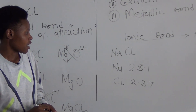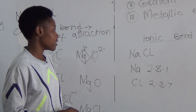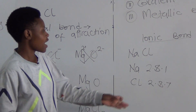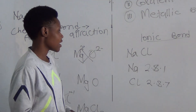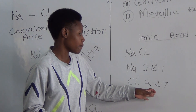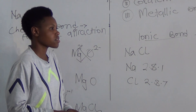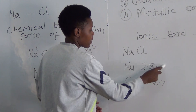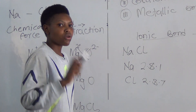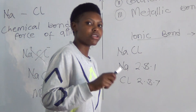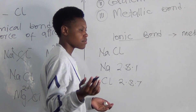For sodium to gain stability, it has to lose one electron so that it can remain with 2, 8 — that is 10 electrons. For chlorine to be stable, it has to gain one electron. When sodium loses an electron, chlorine is going to gain it. We are going to show this in structure form. There is a topic named atoms — the chemistry first topic — which covers the structure of an atom, specifically the structure of the sodium atom.